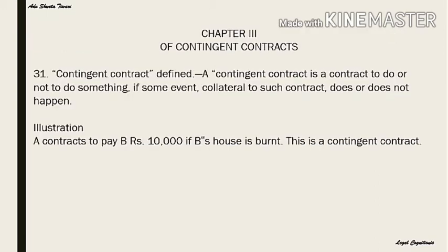Contingent contracts — Section 31: a contingent contract is a contract to do or not to do something if some event collateral to such contract does or does not happen. For example, if A tells B he will give money if it rains today — this is a contingent contract. Illustration: A contracts to pay B ₹10,000 if B's house is burned — this is a contingent contract.